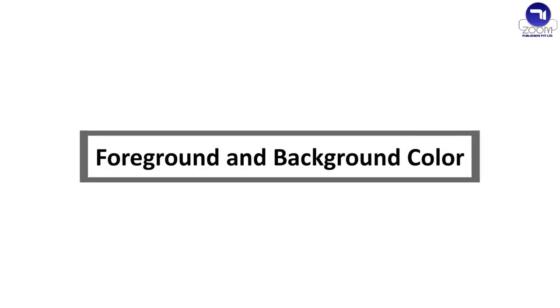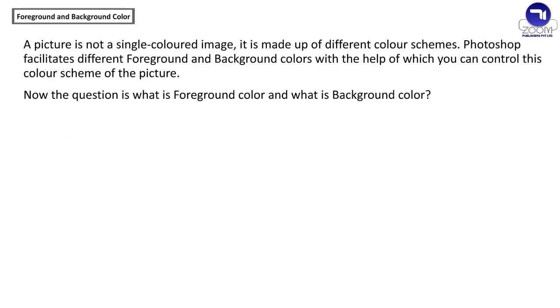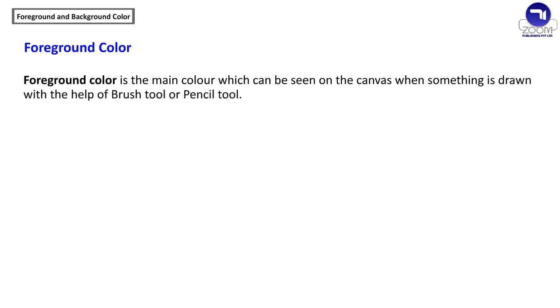A picture is not a single-colored image — it is made up of different color schemes. Photoshop facilitates different foreground and background colors, with the help of which you can control the color scheme of the picture. Foreground color is the main color which can be seen on the canvas when something is drawn with the help of the Brush tool or Pencil tool.